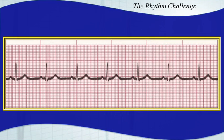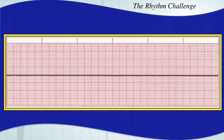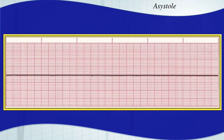This is just a sinus rhythm with 60-cycle artifact. Look at that thick baseline. And this next one is easy: asystole. Start CPR. Asystole — or your EKG monitor isn't on.